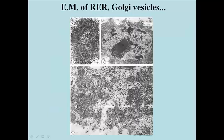In eukaryotic cells, bound ribosomes are attached to membranes of the rough endoplasmic reticulum, or RER, which is actually continuous with the outer membrane of the nuclear envelope. The RER is typically situated in cells near the nucleus on the one hand, and near Golgi vesicles on the other.